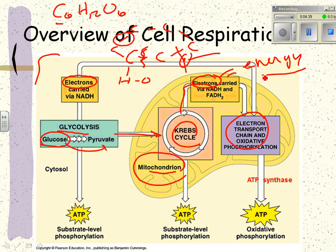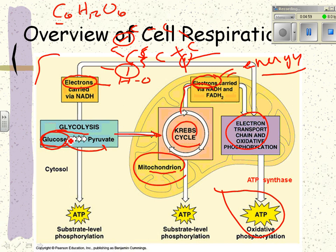So the idea is that you break apart a molecule, use the electrons as your energy source, and then bring them somewhere to make ATP. Kind of like you do some work and somebody pays you with a check — what do you have to do with a check to use it? Cash it. So you have to bring it somewhere, cash it, and now you can use it. Same concept.